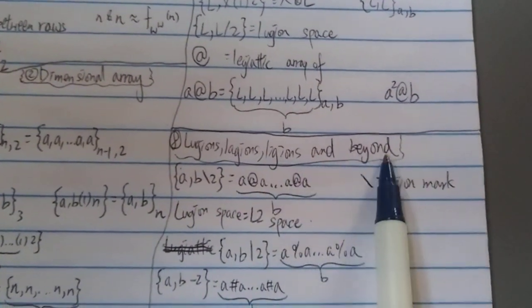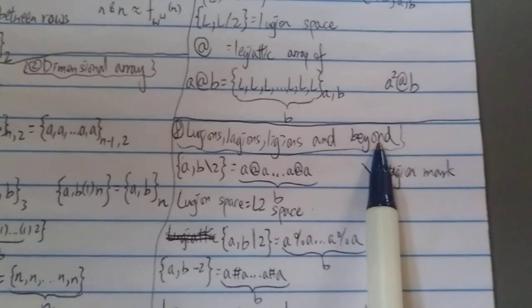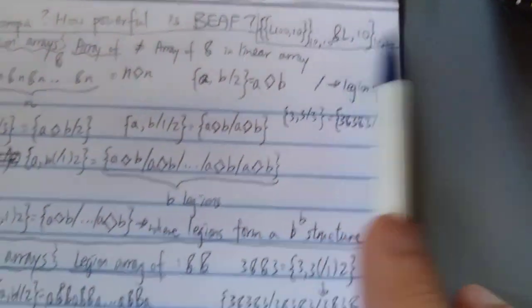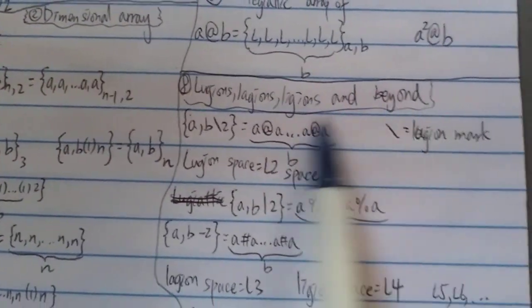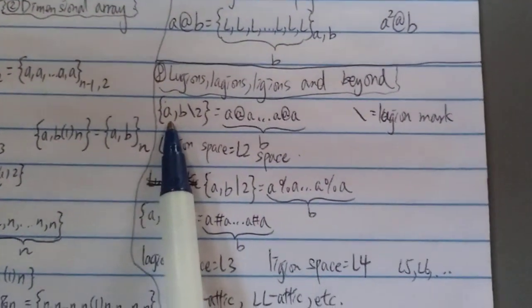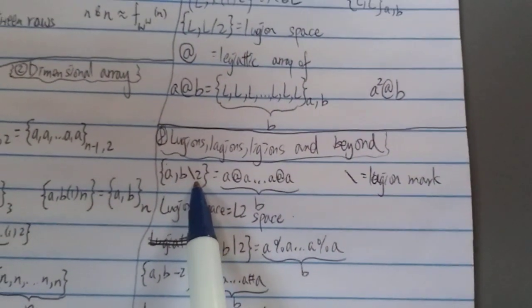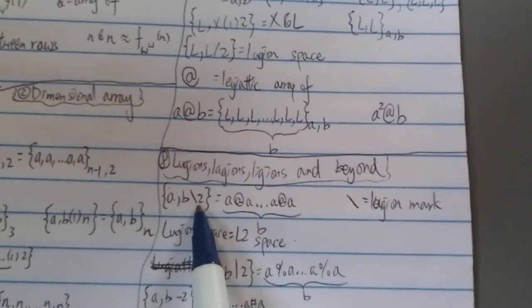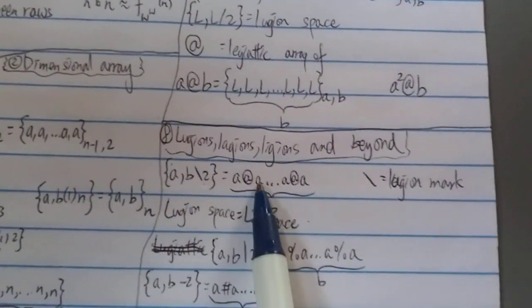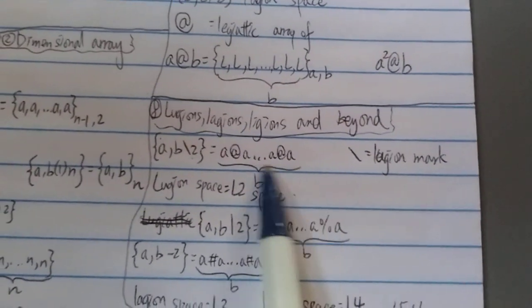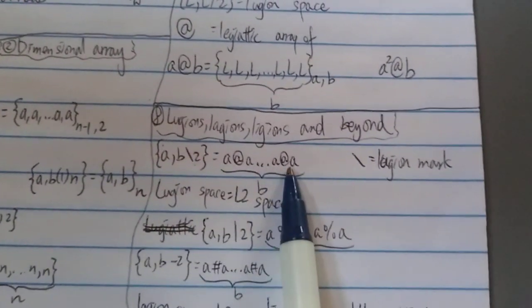The final level is 'legends, legions, and beyond.' This is where the notation in our target number came from — slightly different. {a @ b} here means a @ b @ a @ a for b number of times. A 'legend space' is an L2 space.